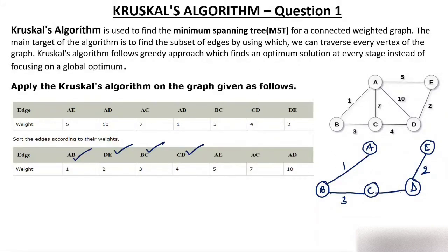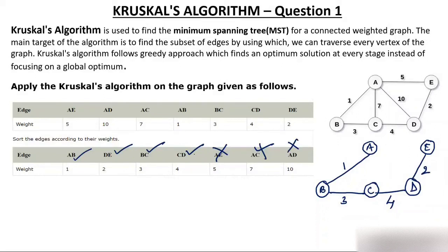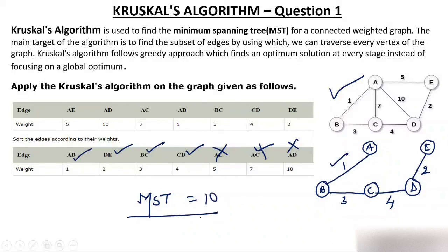Then CD — is there any cycle? No, so select CD. Now AE — if you select AE, it will form a closed path, so do not select AE. Then AC — if you select AC, there will again be a closed path, so cannot select it. The final tree you get is the minimum spanning tree. The weight of this spanning tree is 1 + 2 + 3 + 4 = 10. So the weight of this MST is 10.